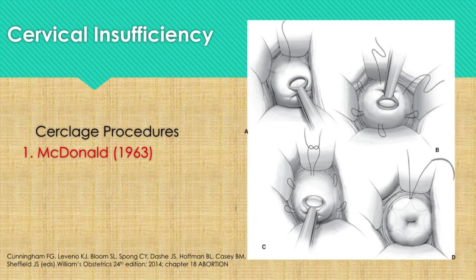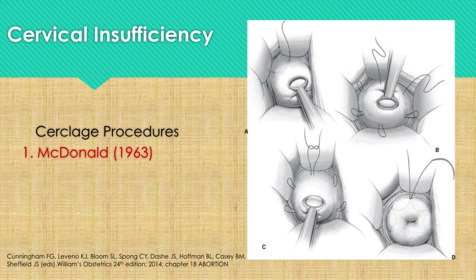There are two kinds of cerclage procedures: McDonald's and the Shirodkar procedure. For the McDonald's cerclage, a number 2 monofilament suture is placed in the body of the cervix very near the level of the internal os, and then continued to encircle the whole cervical os. The suture is tightened around the cervical canal sufficiently to reduce the diameter of the canal to around 5 to 10 mm or less, and then tied. A second suture placed somewhat higher may be of value if the first is not in close proximity to the internal os.